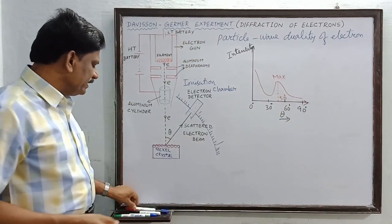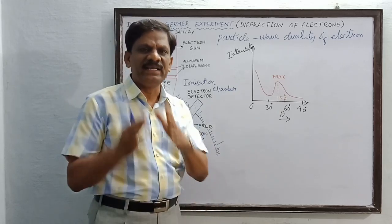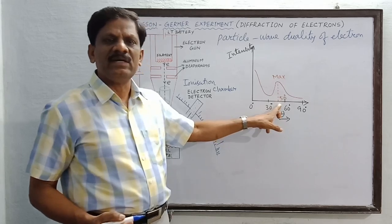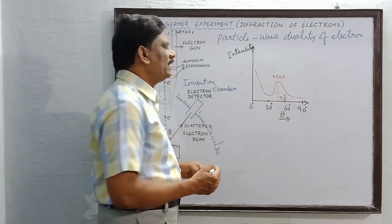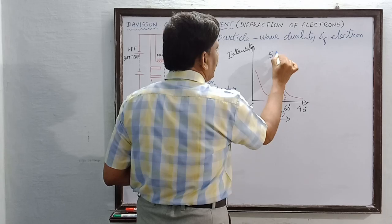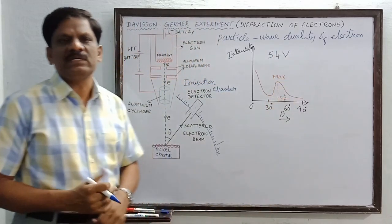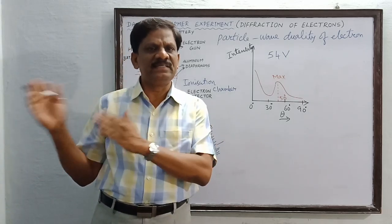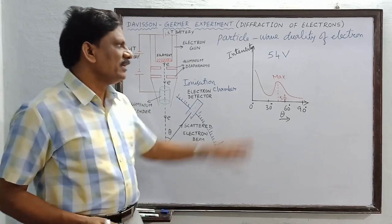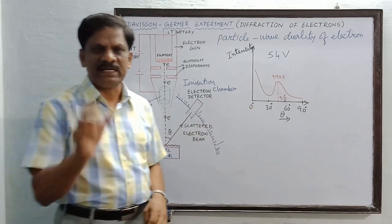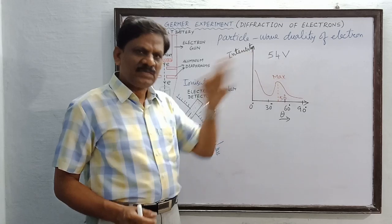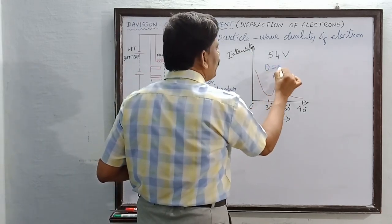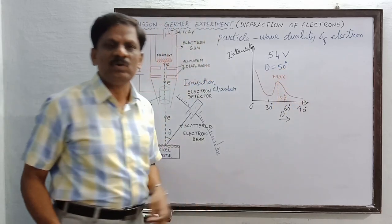The ionization current is found to be maximum corresponding to an angle of scattering theta equal to 50°. This experiment was conducted for an accelerating voltage of 54 volts, which can be varied from around 44 to 70 volts. This graph has been drawn for an accelerating potential difference of 54 volts, corresponding to an angle of scattering of 50°, where the intensity is found to be maximum.